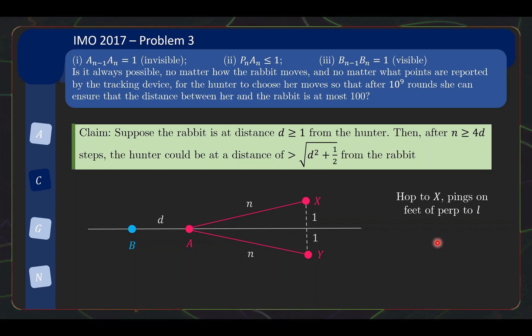First scenario, the rabbit decides to hop to X. So, it has n steps and each step covers distance 1, so it's hopping along this line to X. And after each hop, the ping from the tracking device is the foot of perpendicular to L. So for example, it hops here, the ping happens here, it hops here, the ping happens here, and so on and so on until it hops here and the ping happens here. What I just described is a possible scenario because it obeys the rules described by the problem. Now, there can be a second scenario where the rabbit decides to hop to Y. So in this case, again, it may hop 1, and then the pings this time are also the foot of perpendicular to L. So you hop the distance of 1, the ping is here, hop the distance of 1, the ping is here, and so on until it hops to here and the ping is here.